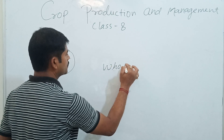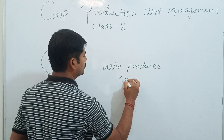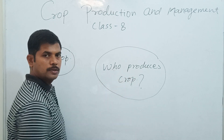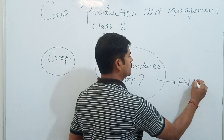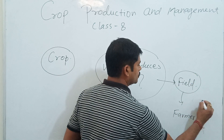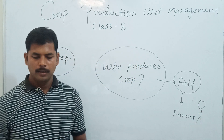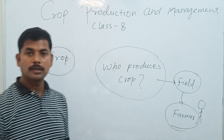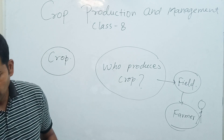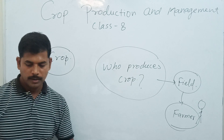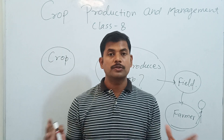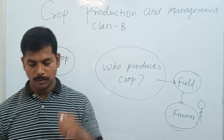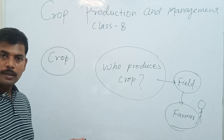Who produces the crop? This is the big question in our mind. If I am talking about who produces the crop, definitely it is some person who is working in the field — that is a farmer. A farmer is a person who cultivates land or crops. You have seen in the village area one person doing agricultural work in the field — that is called a farmer. A person who is producing a variety of food items like crops, vegetables, and fruits — that is a farmer.